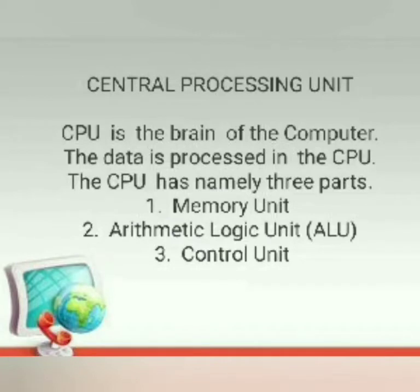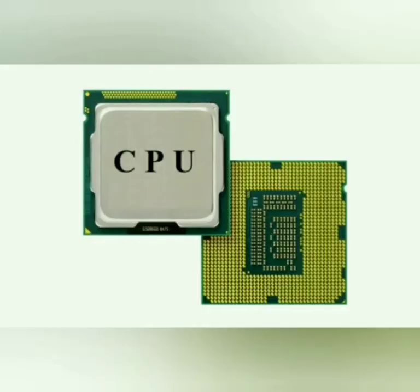The central processing unit is called as the brain of the computer because it is used to process the data given to the computer. The CPU has mainly three parts: memory unit, arithmetic logic unit, and the control unit.